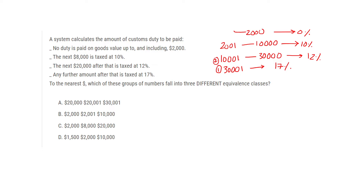For option B: 2,000 is the first class, 2,001 is the second class, and 10,000 is also the second class — so again only two different classes. B is also not correct.